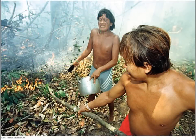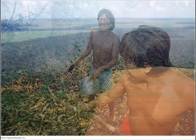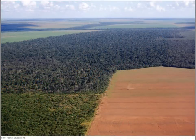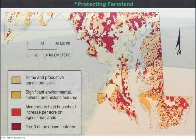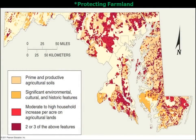We looked at different types of farming. For example, subsistence agriculture — please know what that is. Please know that we looked at three different types: shifting cultivation, intensive subsistence farming, and pastoral nomadism.